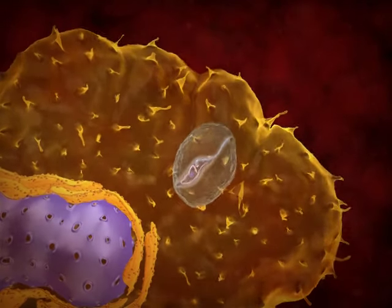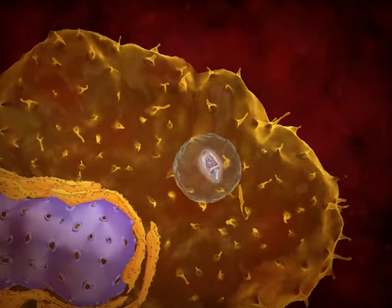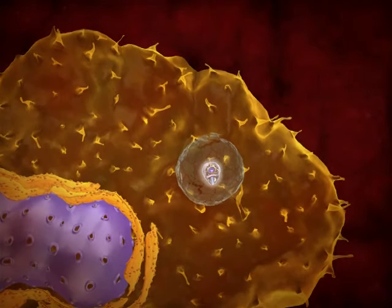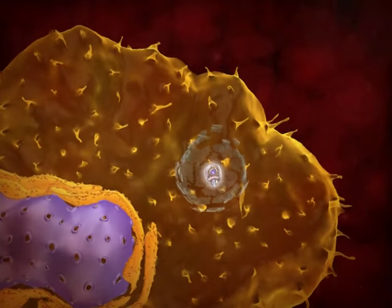In the vacuole, the trypomastigote transforms into an amastigote. This transformation is accompanied by the disruption of the parasitophorus vacuole membrane.